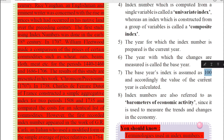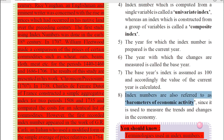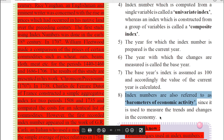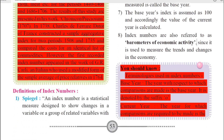Lastly, index numbers are also referred to as barometers of economic activities. They are very important and play a very important role in economic activities. Thus, the calculations made by index numbers are very important since they are used to measure the trends and changes in the economy. In this way, we have studied eight features of index numbers.